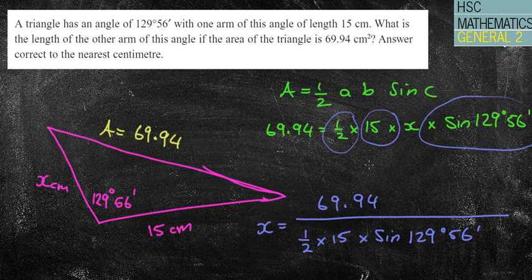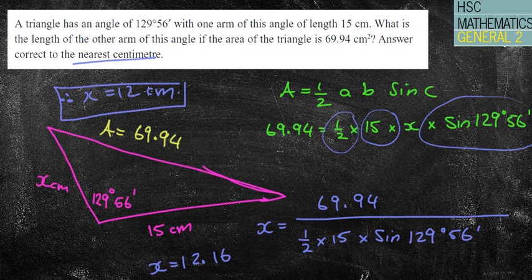So I'm going to chuck that into my calculator now and making sure I'm using sine and I'm entering the right numbers in. And then I press equals and we get X equals 12.16. Again, you could probably check your answer by chucking in the 12 there and doing half times 12 times 15 times sine 129°56'. And hopefully you get the answer close enough to 69.94.